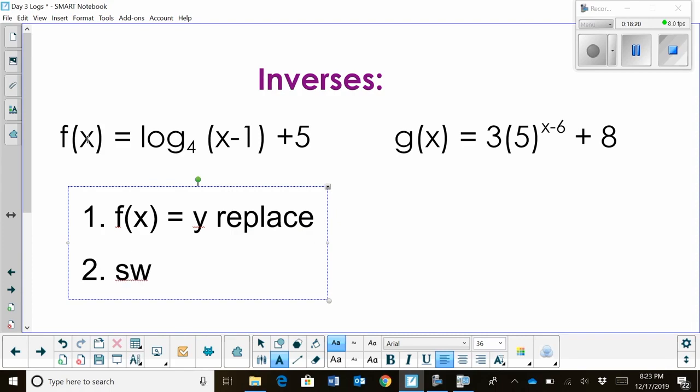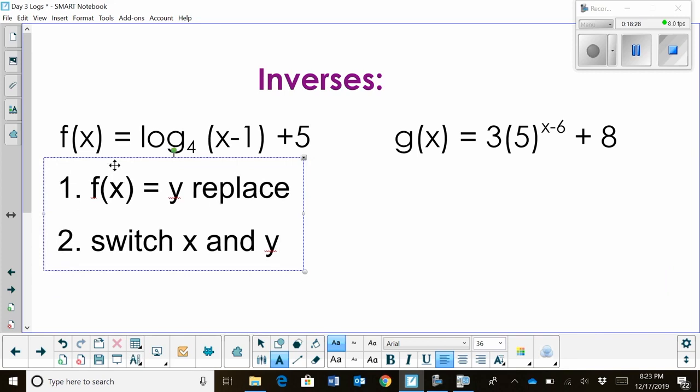Your second step, you're going to switch x and y. In your equation, you just switch positions because an inverse is switching your x and y coordinates. Your third step is just simply solve for y, and that's our last step.